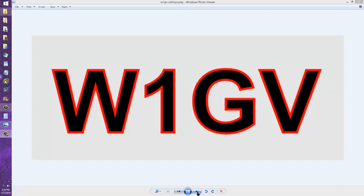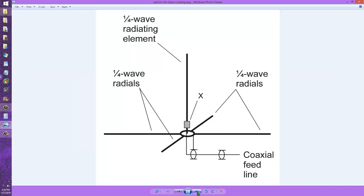And that's kind of unusual to use a capacitor rather than an inductor as the loading element at the base of a vertical ground plane antenna.